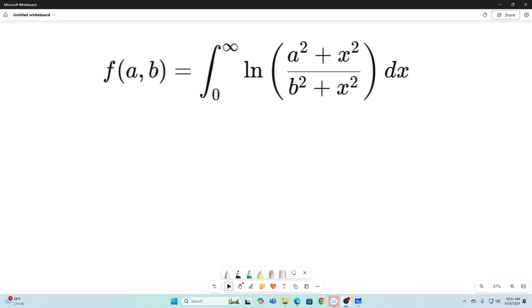You can see it's going to be a function of a and b. So we set f(a,b) equal to the integral from 0 to infinity of the natural log of (a² + x²) over (b² + x²) dx. Now it's easy to see that at the bounds this integral will go to 0. The expression inside the integral goes to 0 in both cases, so this integral will converge.